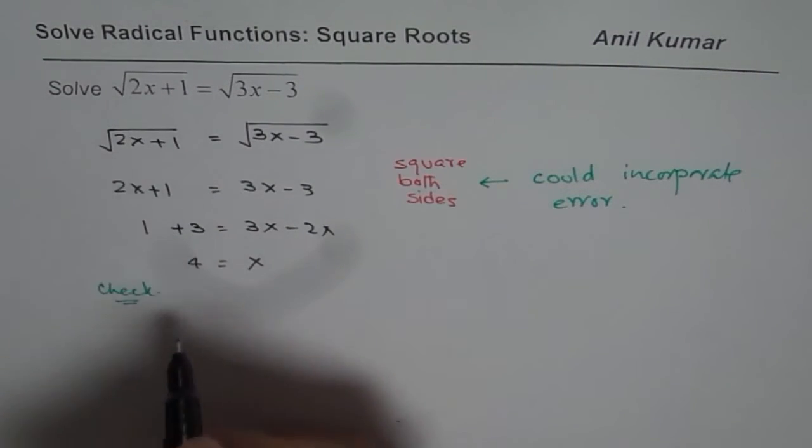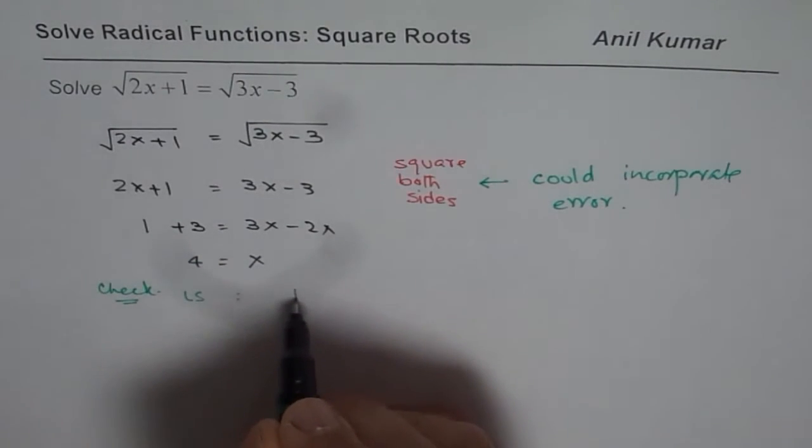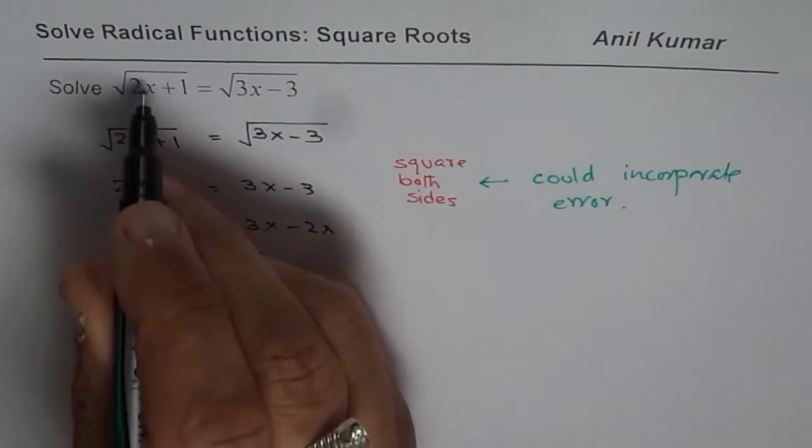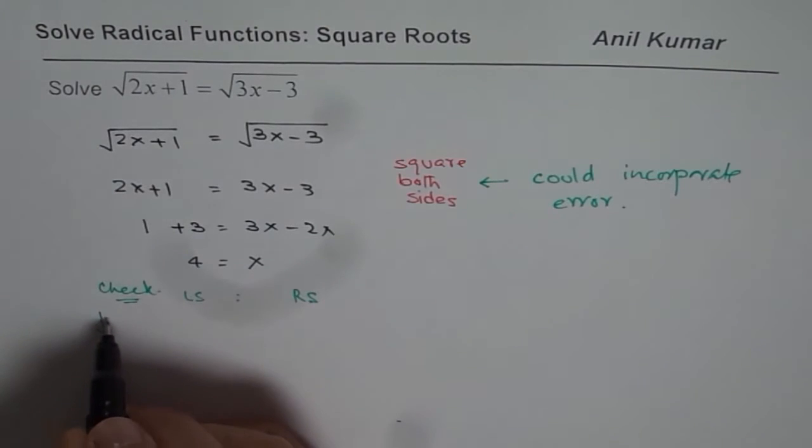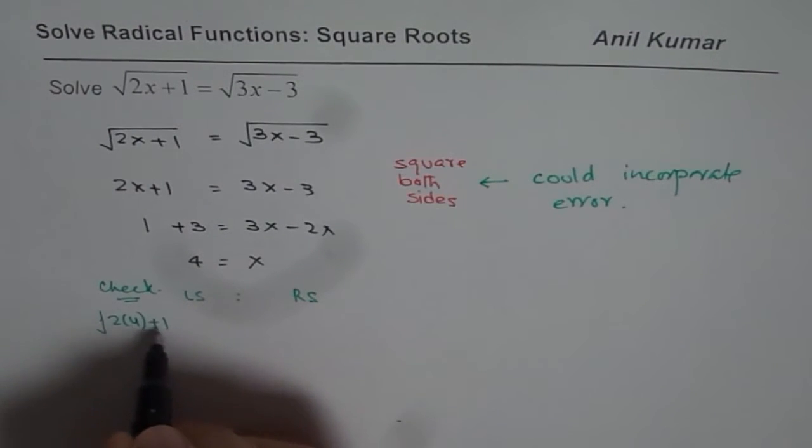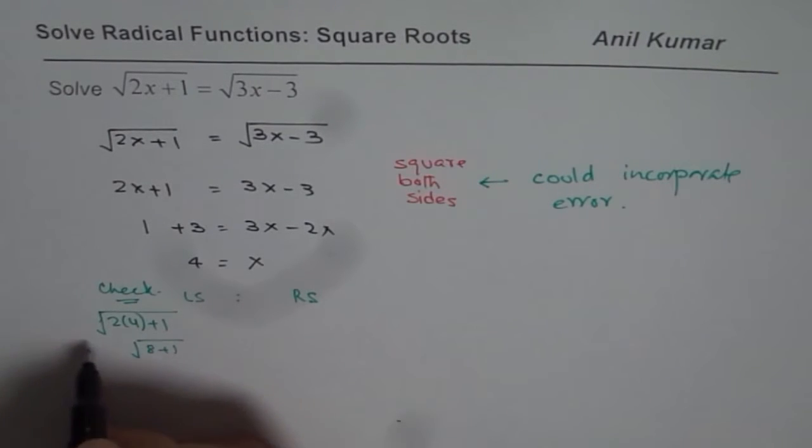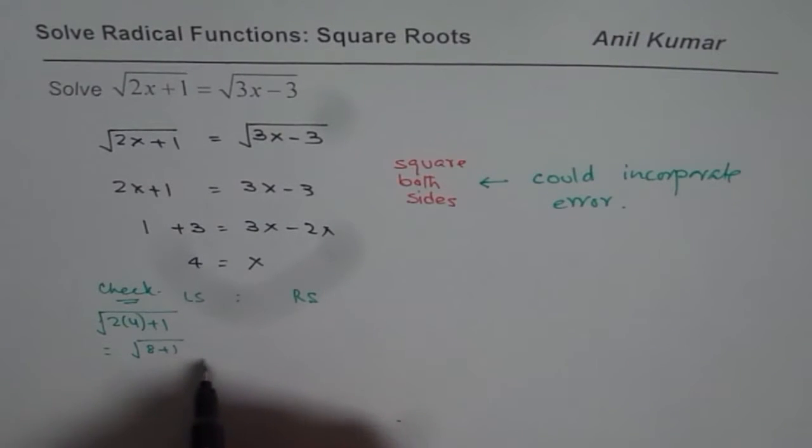So if I substitute 4 on the left side, we'll check both left and right sides. If I write 4 for the left side, we get square root of 2 times 4 plus 1, which is square root of 8 plus 1, which equals square root of 9, which is 3.